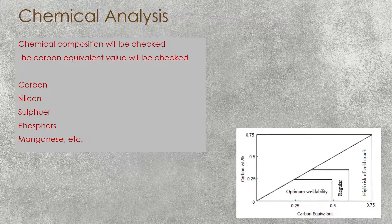Chemical analysis: this is the most important test available for the reinforcement. It is done before manufacturing and also after manufacturing to make sure the expected properties are present. With chemical analysis, we check the composition of chemicals and their limitations. We also calculate the carbon equivalent value. Carbon, silicon, sulfur, phosphorus, and manganese are checked in these tests.